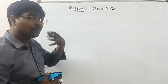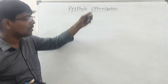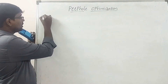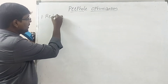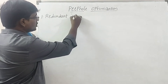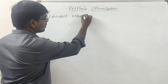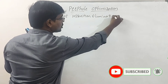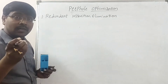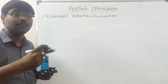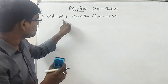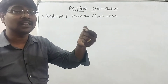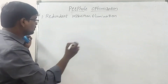Now, what are the different techniques used to perform Peephole Optimization? The first one is Redundant Instruction Elimination. Redundancy means repetition — we are simply removing repeated or unnecessary instructions.